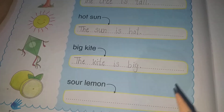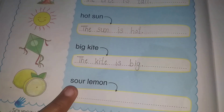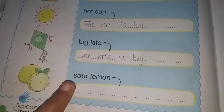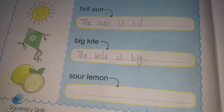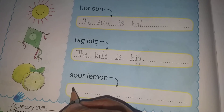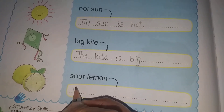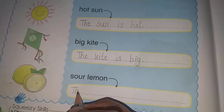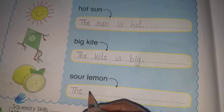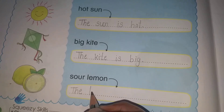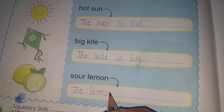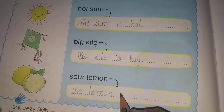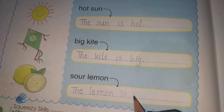And the last one is sore lemon. Lemon kaisa hota hai? Aap jante ho uska taste kaisa hota hai? Bilkul khatta hota hai. To again start karenge sentence 'the' se. The lemon is sore.